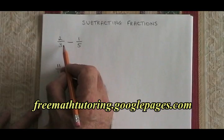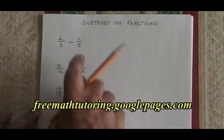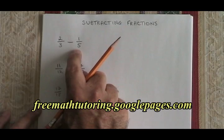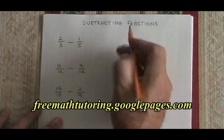If we want to subtract 2 thirds minus 1 fifth, we have to have a common denominator. So we need to know the multiples of 3 and 5. I'm going to draw them here.